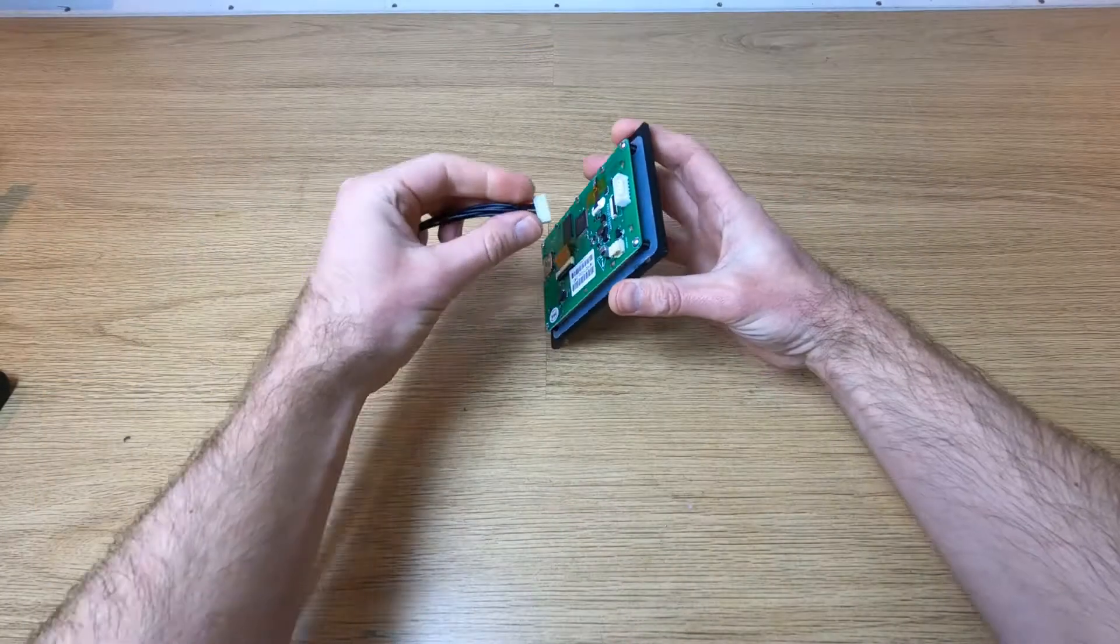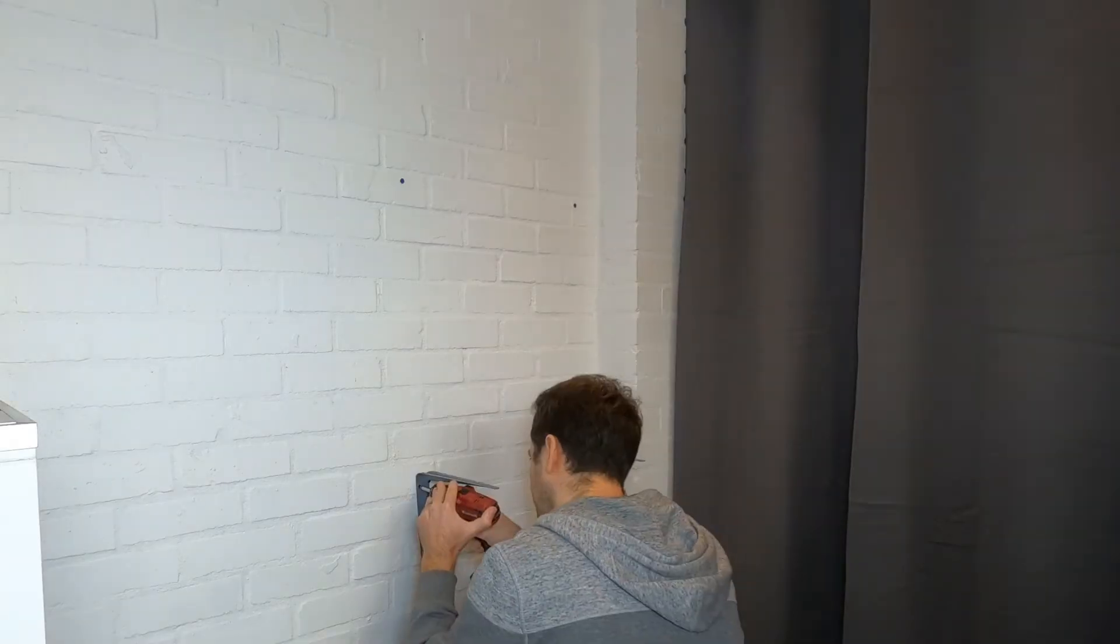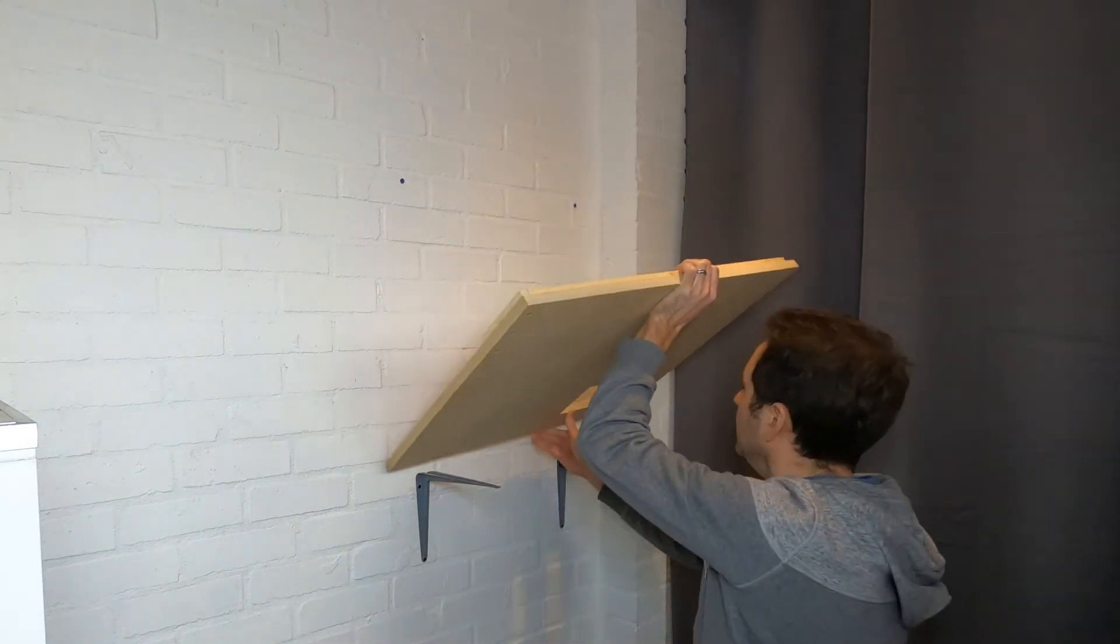Now test everything. Plug your screen in and make sure it comes on when the power is turned on to your printer, and also make sure all your fans work by plugging them all in and testing. If you have anything not working, now's the time to go back and investigate why. Once you're happy that everything works, it's time to think about assembling your enclosure in the position it's going to stay in.